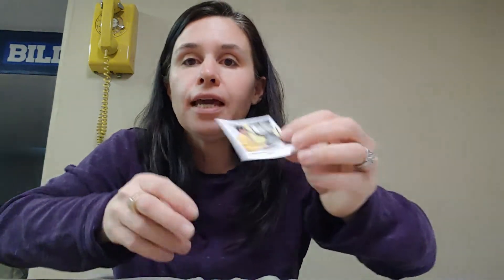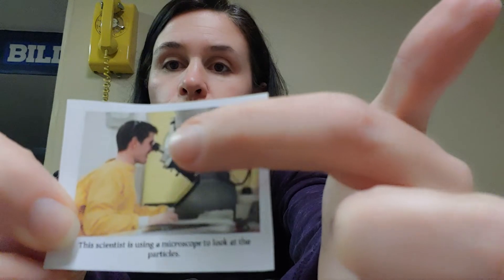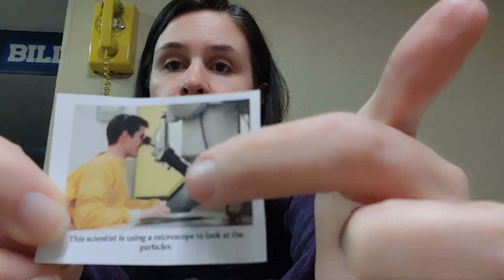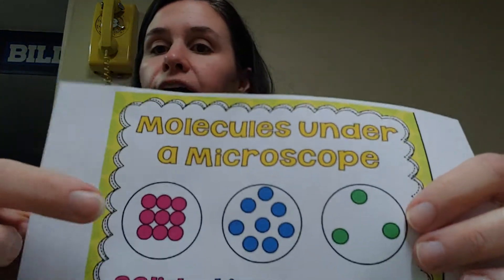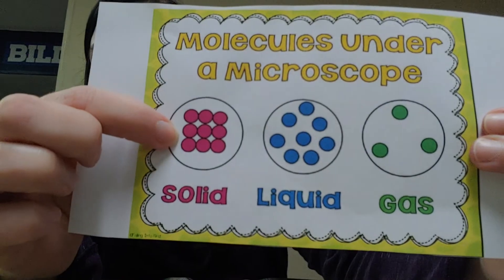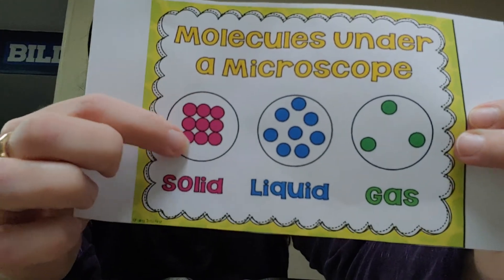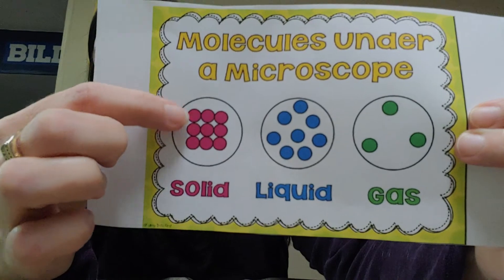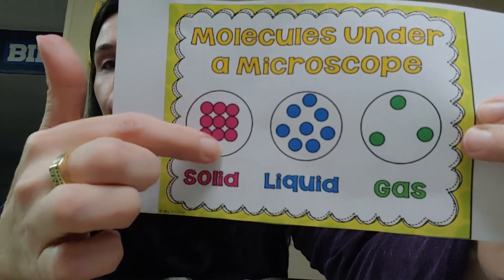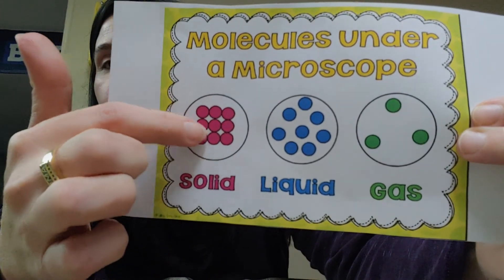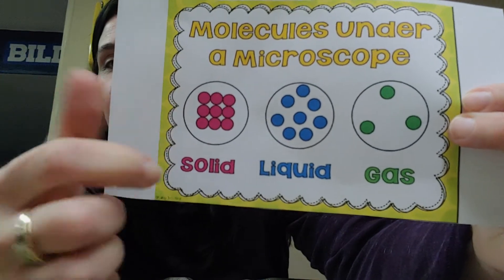All matter has very tiny particles or molecules in them. You can't see them, but scientists use a special tool called a microscope in order to see them. In a solid, the molecules are very close together. They're all touching — that looks like something we see in math: an array. Look at how they're all touching; they're very close together and they stay nice and tight.